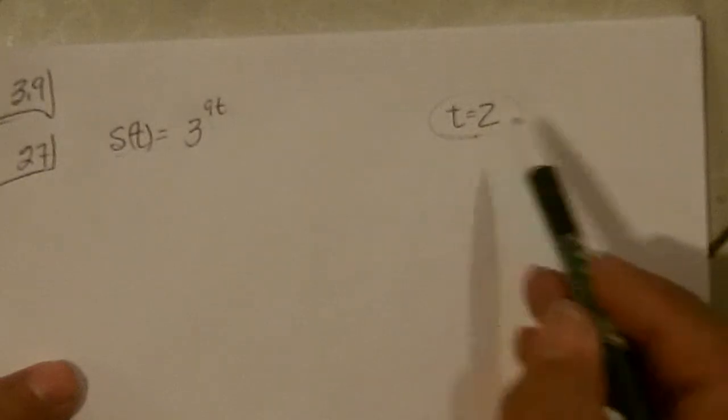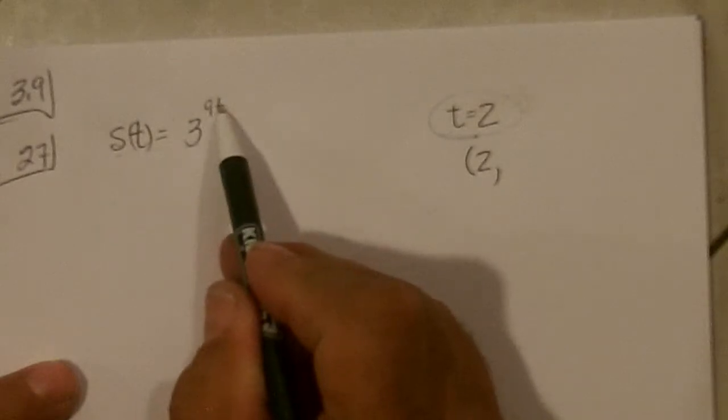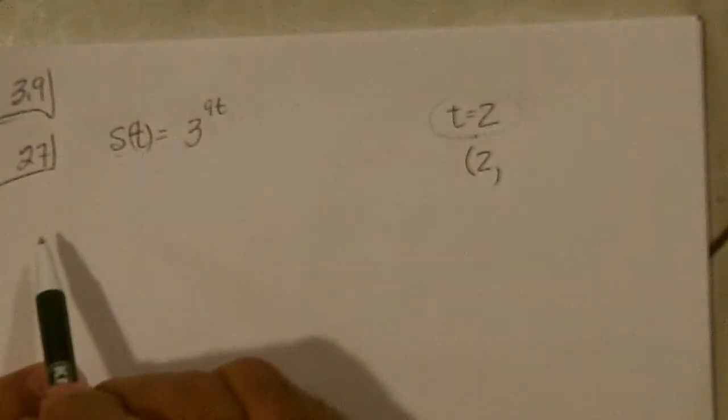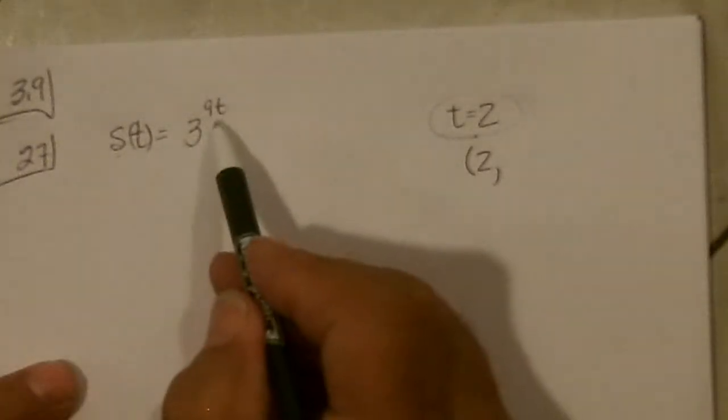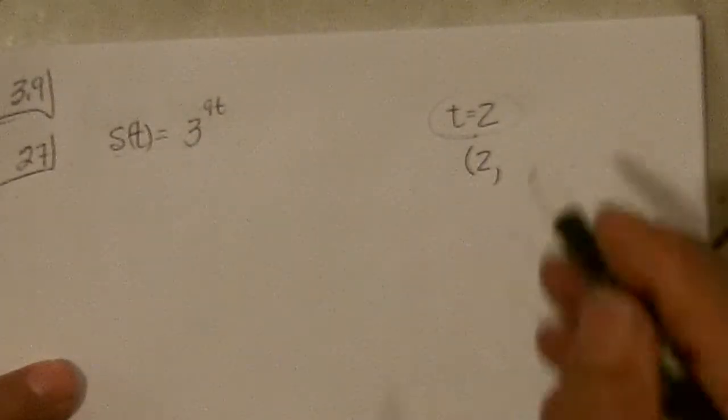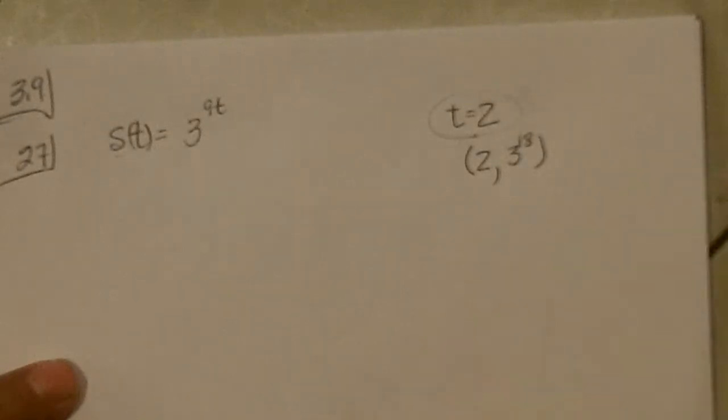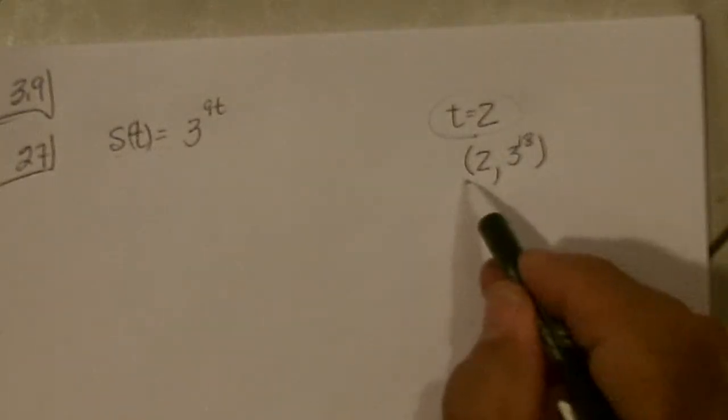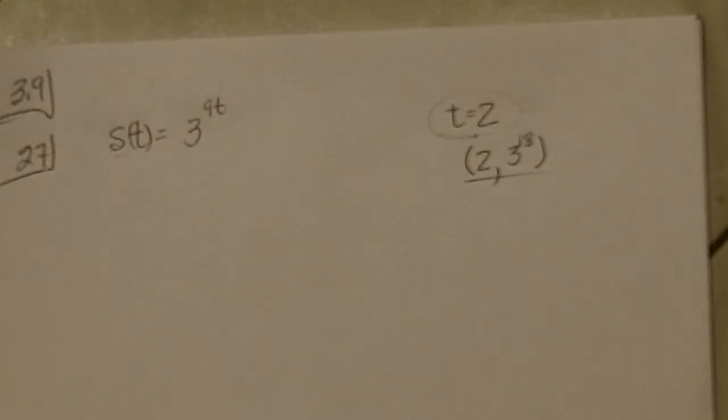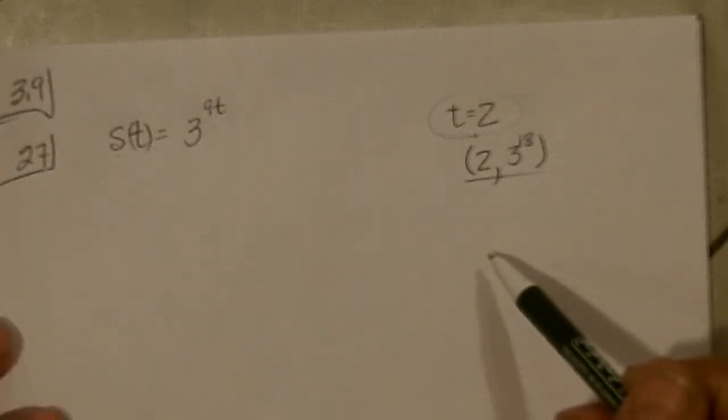So if we put 2 in there, we'll get the point. So 9 times 2 is 18. So we get 3 to the 18th is the y-coordinate of the point where we're trying to find the tangent line. And that's really, really big, so it's going to be really high above 2, but so what?